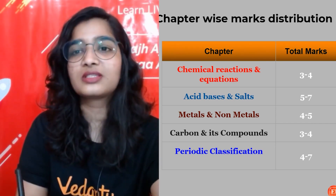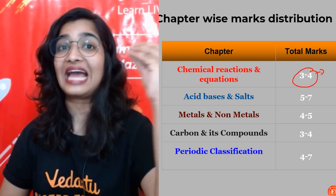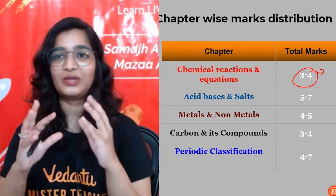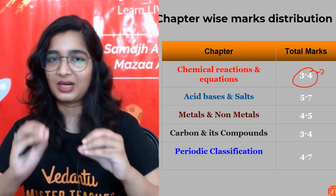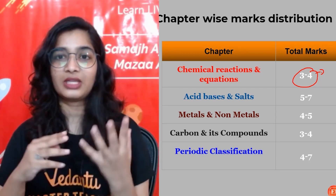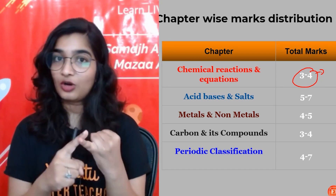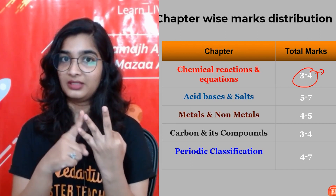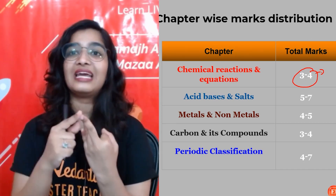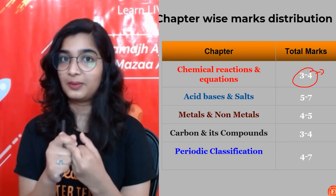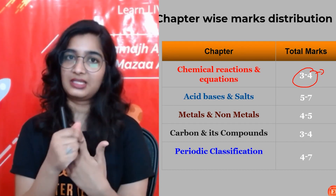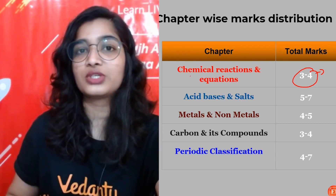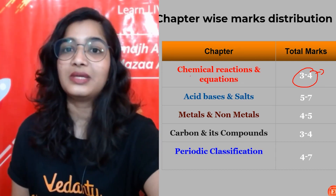Chapter 1 — Chemical Reactions and Equations: expect three to four marks, based on the sample paper and previous question papers. Focus on decomposition reactions — there are three types: thermal decomposition, photolytic decomposition, and electrolytic decomposition. These three types are very important. Also focus on the reactivity series and single displacement reactions, which are very, very important in this chapter.